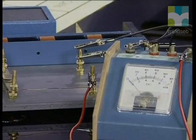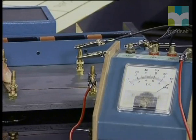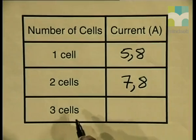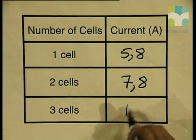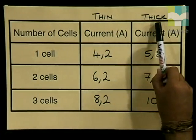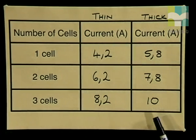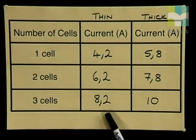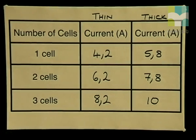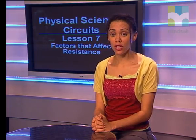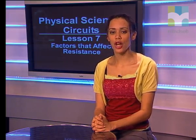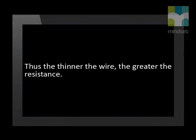Now with three cells in series, closing the switch, the reading approximates at 10 amperes. Comparing the results for our thin copper wire versus our thick copper wire, we find that the thicker copper wire conducts a larger current than the thinner copper wire. So the diameter of the wire affects its ability to conduct electrical current. The greater the cross-section or thickness of the wire, the easier it is for the current to flow. Thus, the thinner the wire, the greater the resistance.